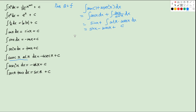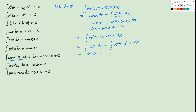Now let's look at question 2H: the integral of sec²x(1 − cot²x) dx. We expand to get the integral of sec²x dx minus the integral of sec²x·cot²x dx. The first term gives tanx. For the second term, sec²x·cot²x simplifies to (1/cos²x)·(cos²x/sin²x) = cosec²x. So that integral is negative cotx. The final answer is tanx + cotx + C.